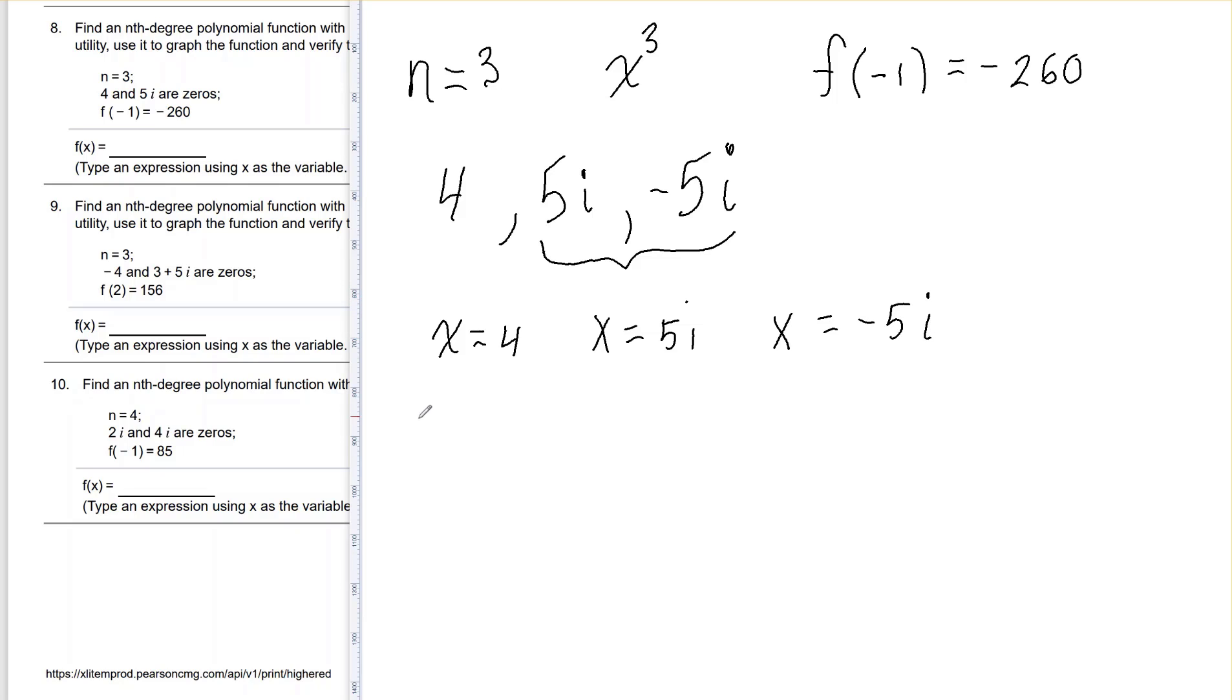So what this tells me is that x minus 4 is a factor, x minus 5i is a factor, and x plus 5i is a factor.